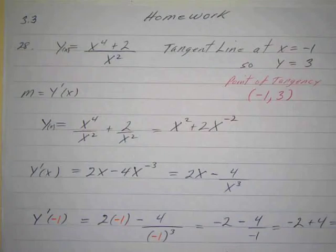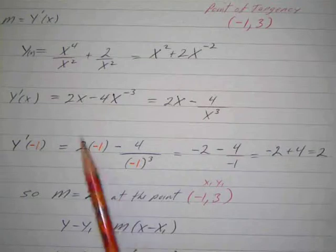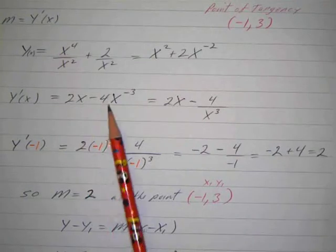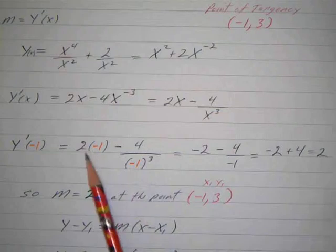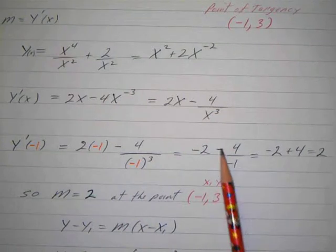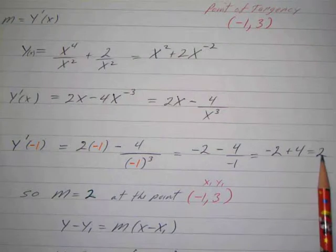And then I want to find the slope at x equal to negative 1, so I'll put negative 1 into the derivative and evaluate it there. So y prime of negative 1 is going to be 2 times negative 1 minus 4 over negative 1 cubed, which is 2 times negative 1 is negative 2, minus 4 over negative 1, and negative over negative is positive. So negative 2 plus 4 over 1, which is 4, which is just 2.